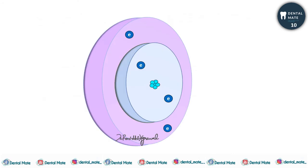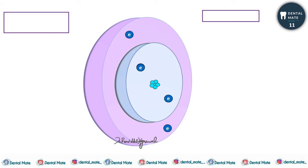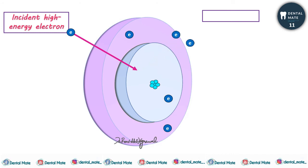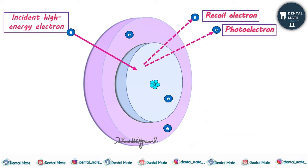Consider a tungsten atom with two shells. A high-energy electron is incident on the atom. This incident high-energy electron ejects an electron from the inner orbital, producing a recoil electron and a photoelectron. Along with that, an electron vacancy is created in the place from which the inner electron was ejected.